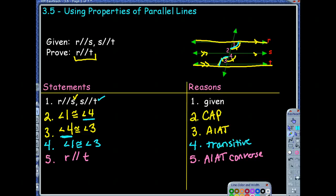So it made sense. We didn't have a transitive property we could talk about for parallel, but there is a theorem for that.